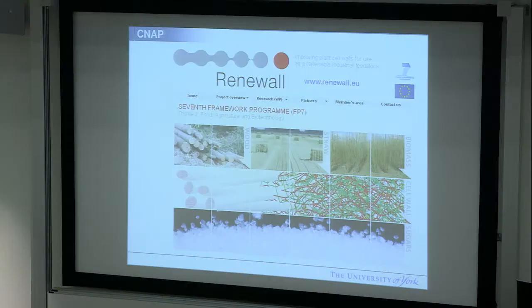The first bit I'll talk about is work we've been doing trying to understand digestibility in plant cell walls and how that might be manipulated. A lot of that work started in a Framework Seven program that came to an end last year called RENEWALL—Improving Plant Cell Walls for Use as Renewable Industrial Feedstock. What we did in this network was we brought together most of the leading plant cell wall research groups in Europe and asked them to focus very much on secondary cell walls. We had a lot of expertise, we wanted to bring them in and focus it onto this problem about biomass digestibility, understanding it and how we might manipulate it.